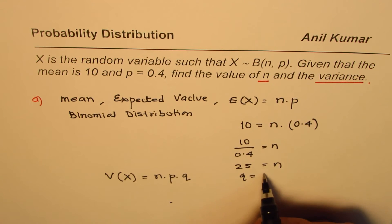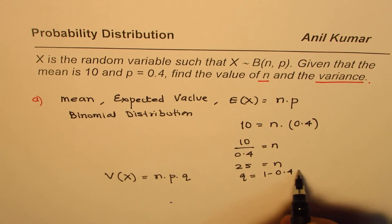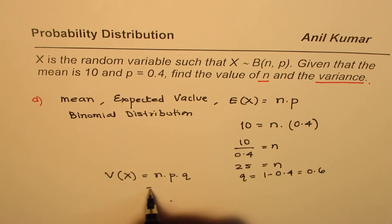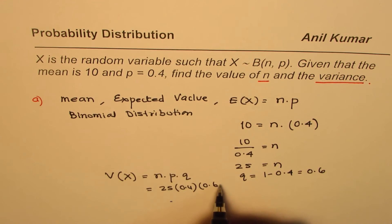Therefore, variance will be n, which is 25, times p, which is 0.4, times q, which is 0.6.